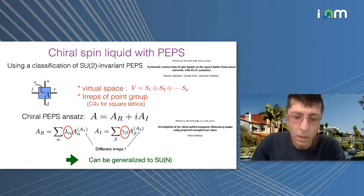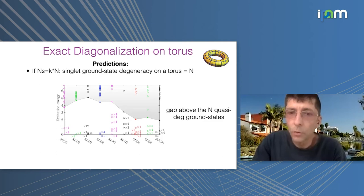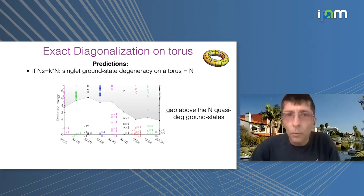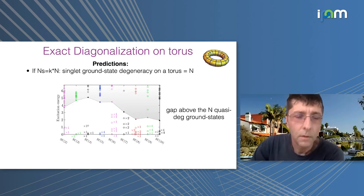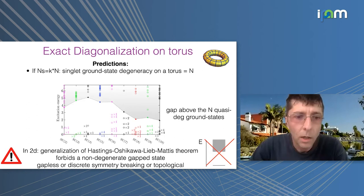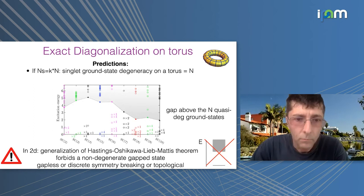Now let me show the results. From exact diagonalization on the torus, the prediction is to have an N-fold degenerate ground state. Here you see the excitation energy for various SU(N) on different systems, always in the singlet sector, with excited states shown in gray. The degeneracy is not perfect because we are on a finite system, but it's quite good. I remind you that in two dimensions there is a generalization of the Lieb-Mattis theorem by Oshikawa and Hastings for SU(2), which can be generalized to SU(N): it's impossible for this system to have a single non-degenerate gapped state, so you have to either break lattice symmetry or be topological.